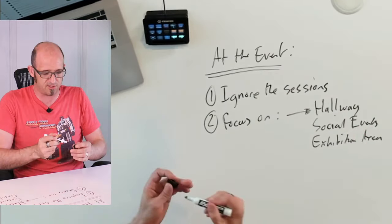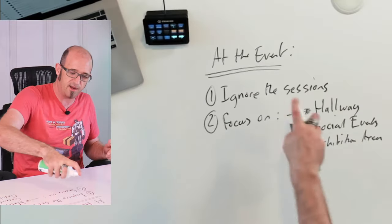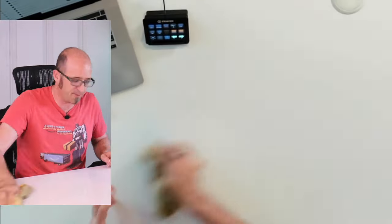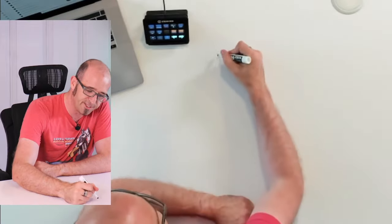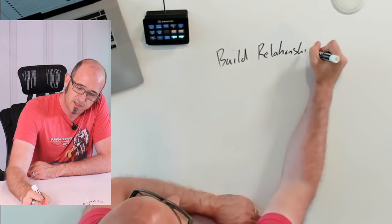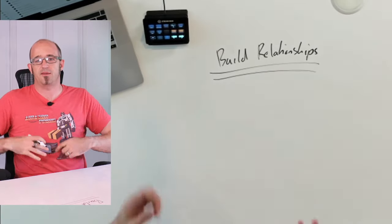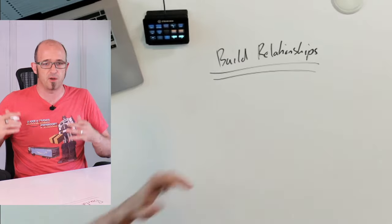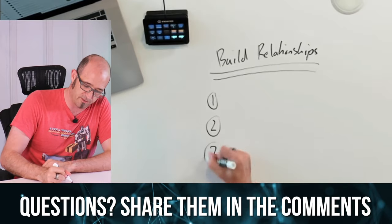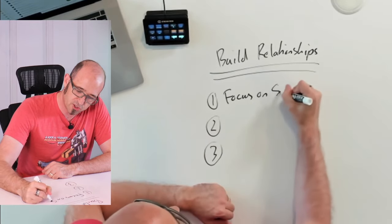So once you focus on those areas, what are you supposed to do? Why are you going to those areas? Am I just going to go there and eat cookies and drink buckets of coffee? No. The number one goal that we've got here is to build relationships. The big mistake that people make when they go to conferences is that they go in there and they try to just focus on awareness of their product, awareness of their service. That is the wrong thing to do. So there's three things I want to talk about here that you should focus on. The first one is to focus on service.